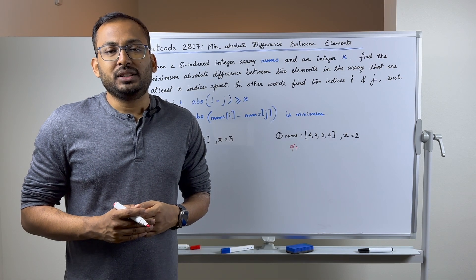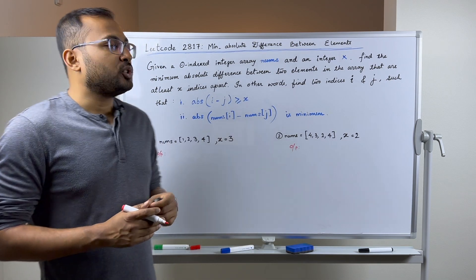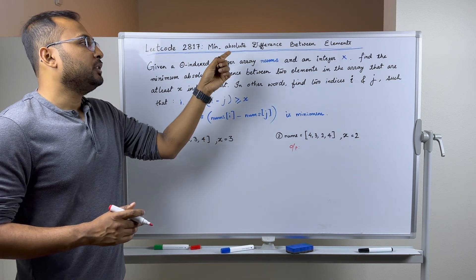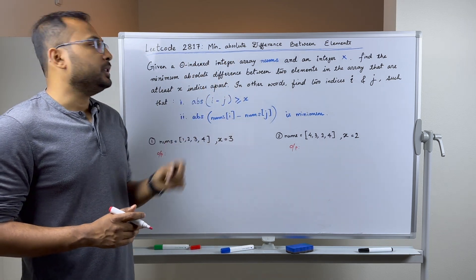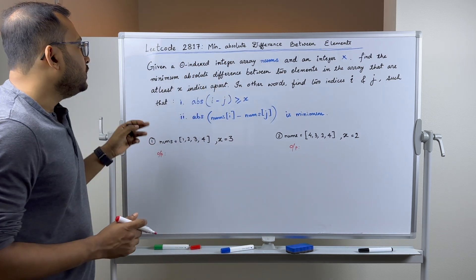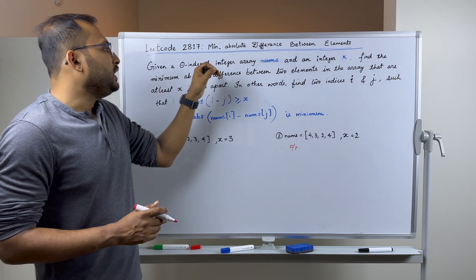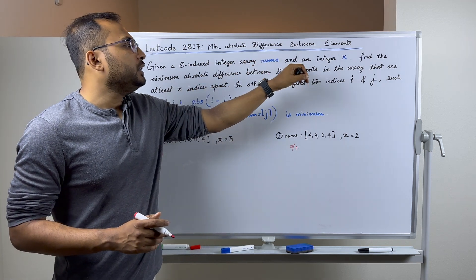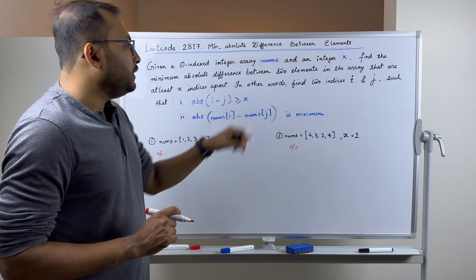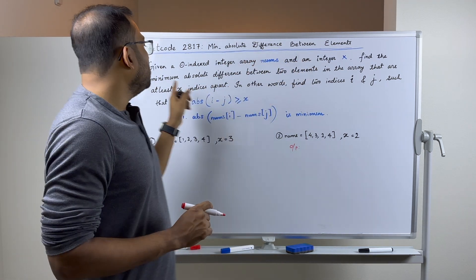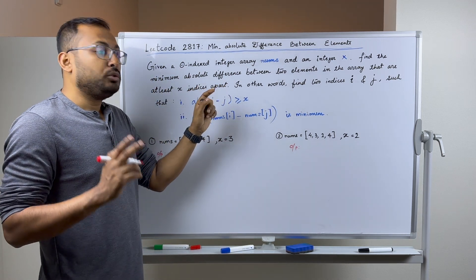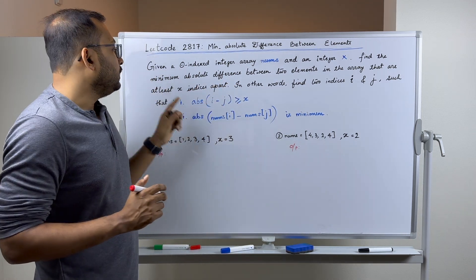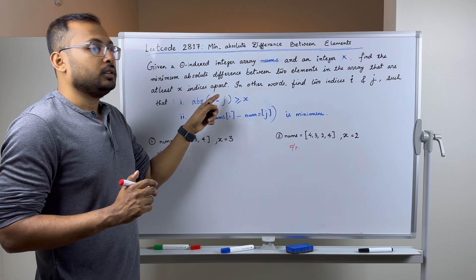Hey everyone, my name is Sandeep and today I am solving LeetCode problem 2817, Minimum Absolute Difference between Elements. We are given a zero-indexed integer array nums and an integer x, and we need to find the minimum absolute difference between two elements in the array that are at least x indices apart.